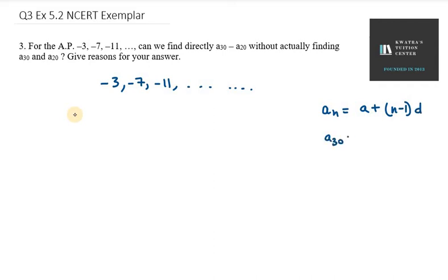AN means if I want to find A30, it will be A plus (30 minus 1)D, which can be written as A plus 29D. Similarly, A20 can be written as A plus 19D.